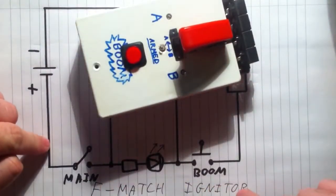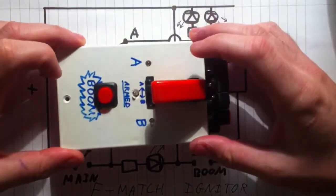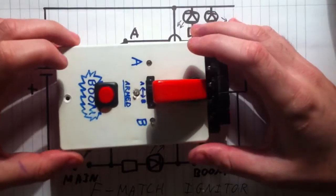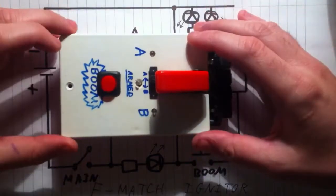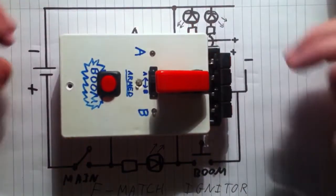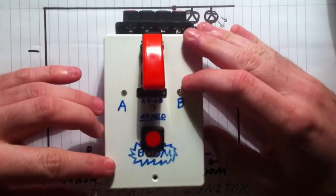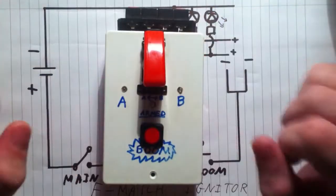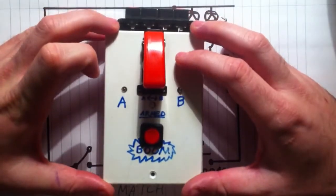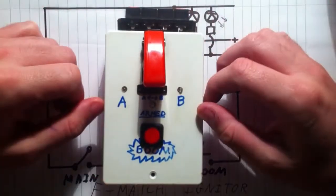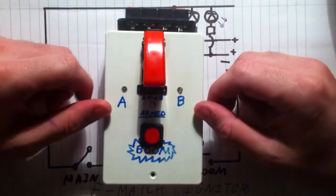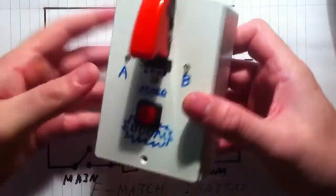The beauty that she is, this is an e-match igniter. An e-match is a small electronic device that can be used to remotely ignite fireworks. They use them in large displays. So if you've purchased some nice big fancy fireworks for bonfire night, this is the trick for you.